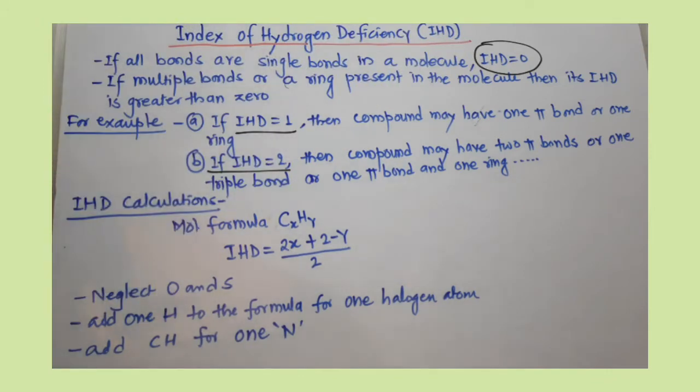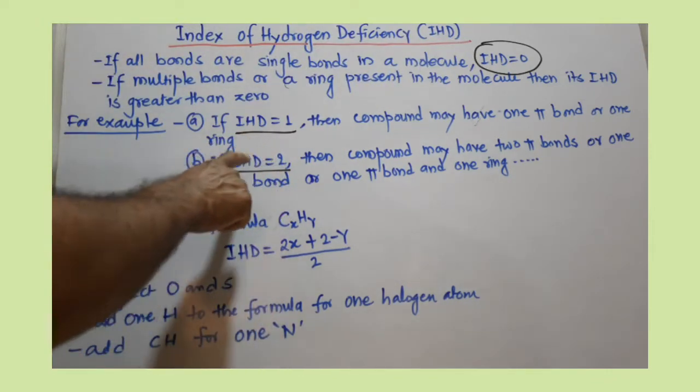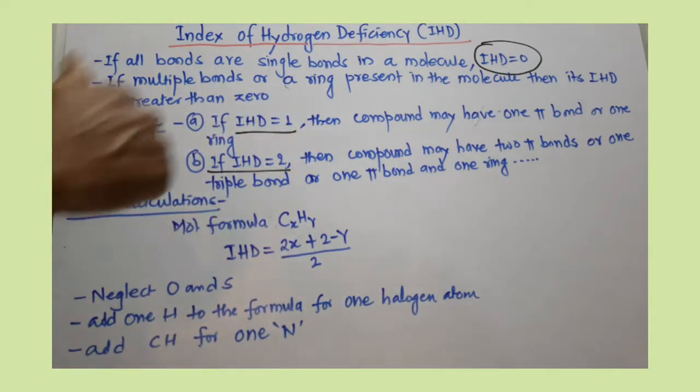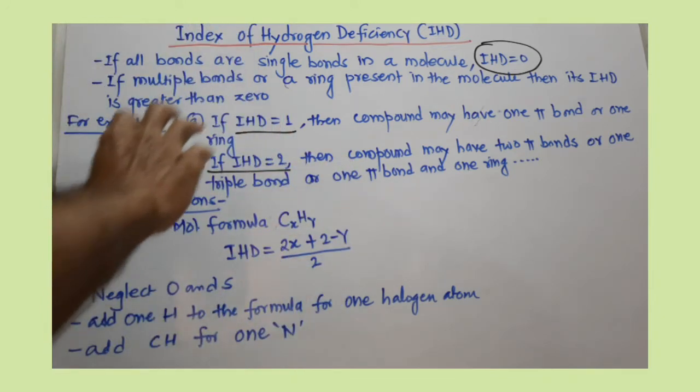Accordingly, you can find out different combinations, different possibilities. When IHD value is greater than one, we must be alert and try different combinations for pi bonds or rings.